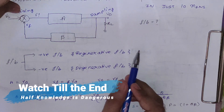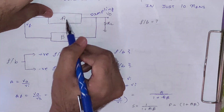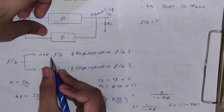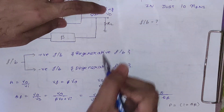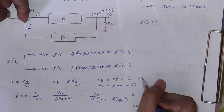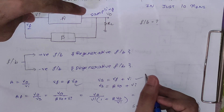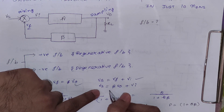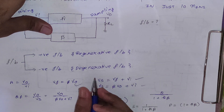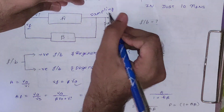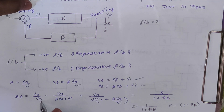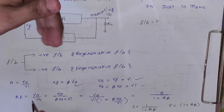Now let us derive the closed-loop gain from this connection. The open-loop gain A equals Vo by Vi. The feedback voltage Vf can be written as beta times Vo. The source voltage Vs equals Vi plus Vf. Since Vf equals beta·Vo, we substitute to get Vs = Vi + beta·Vo. The closed-loop gain is output upon input, so we compute Vo/Vs.